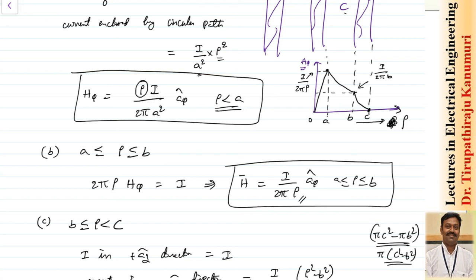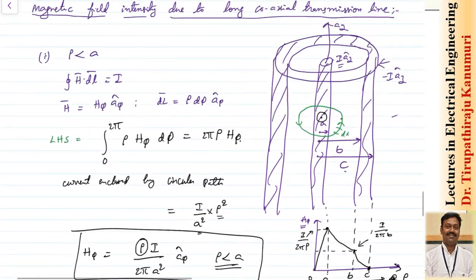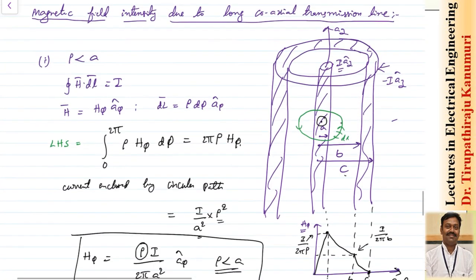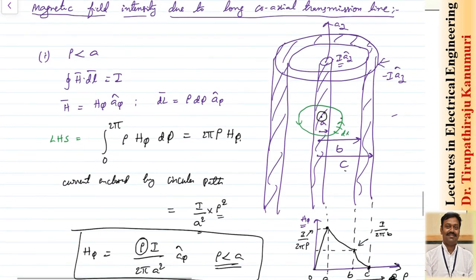This is how the magnetic field intensity varies for an infinitely long coaxial transmission line. I hope this is completely clear. If you still have any queries, please leave your comments in the comment section below and I will answer them.